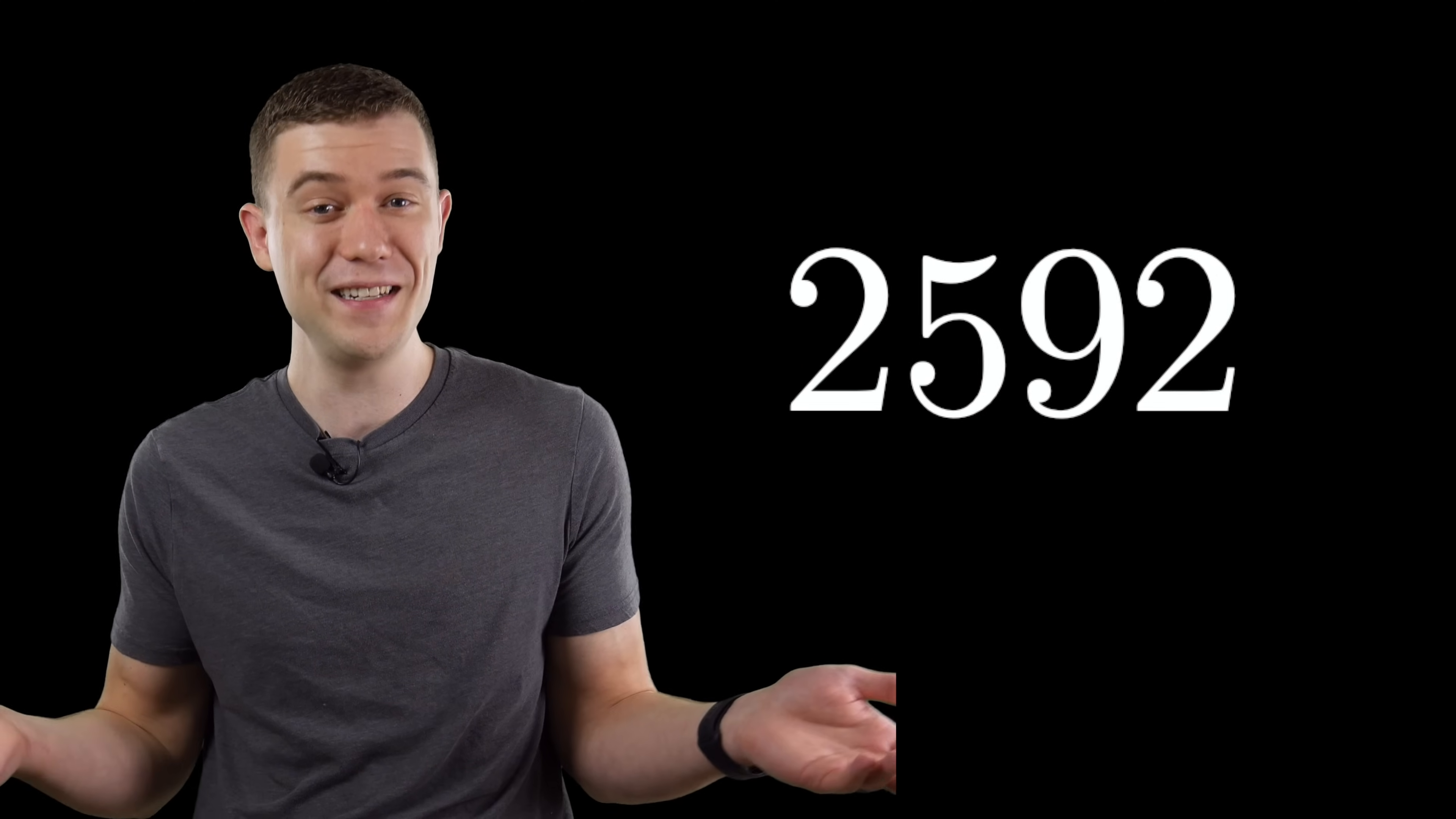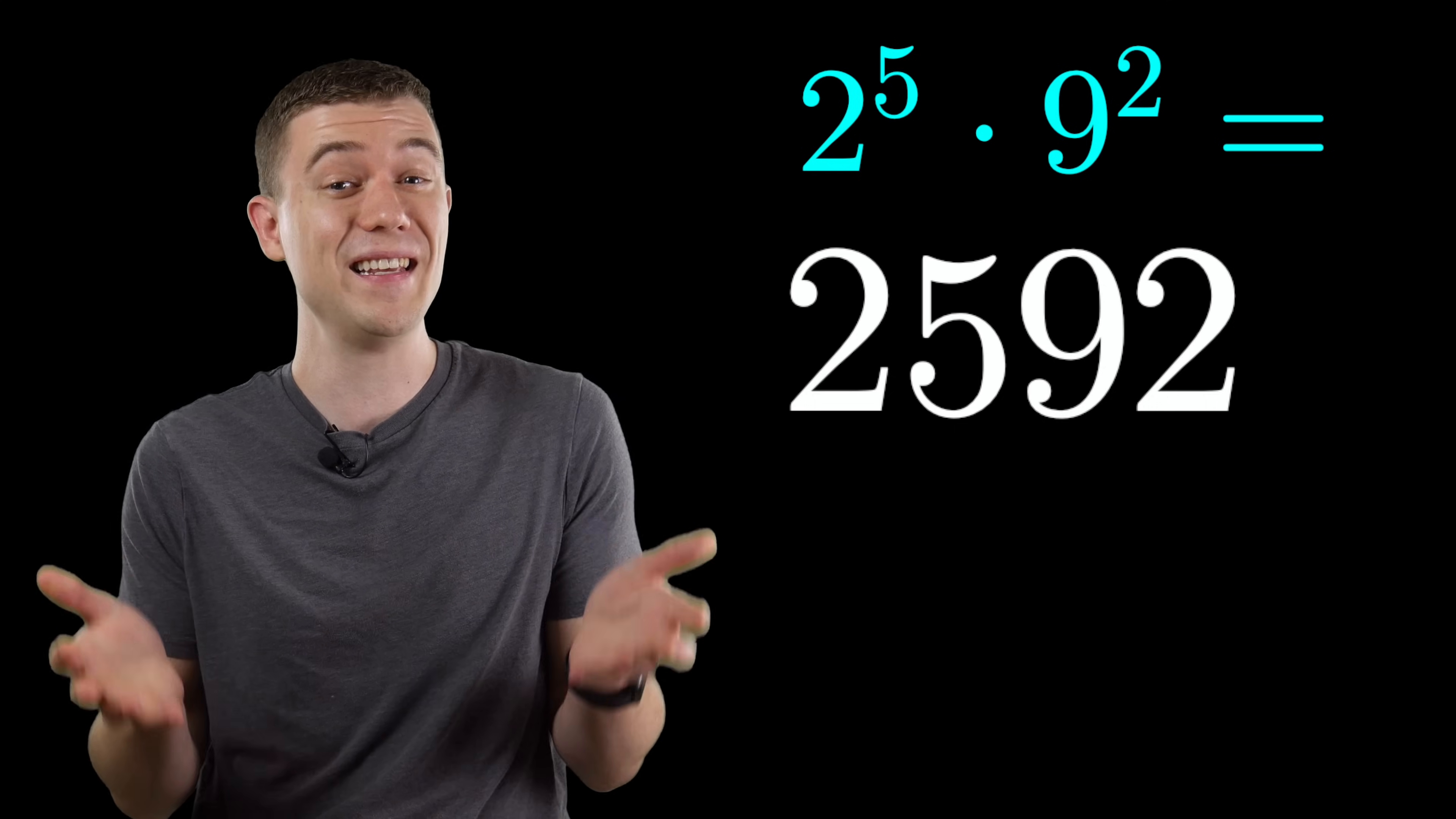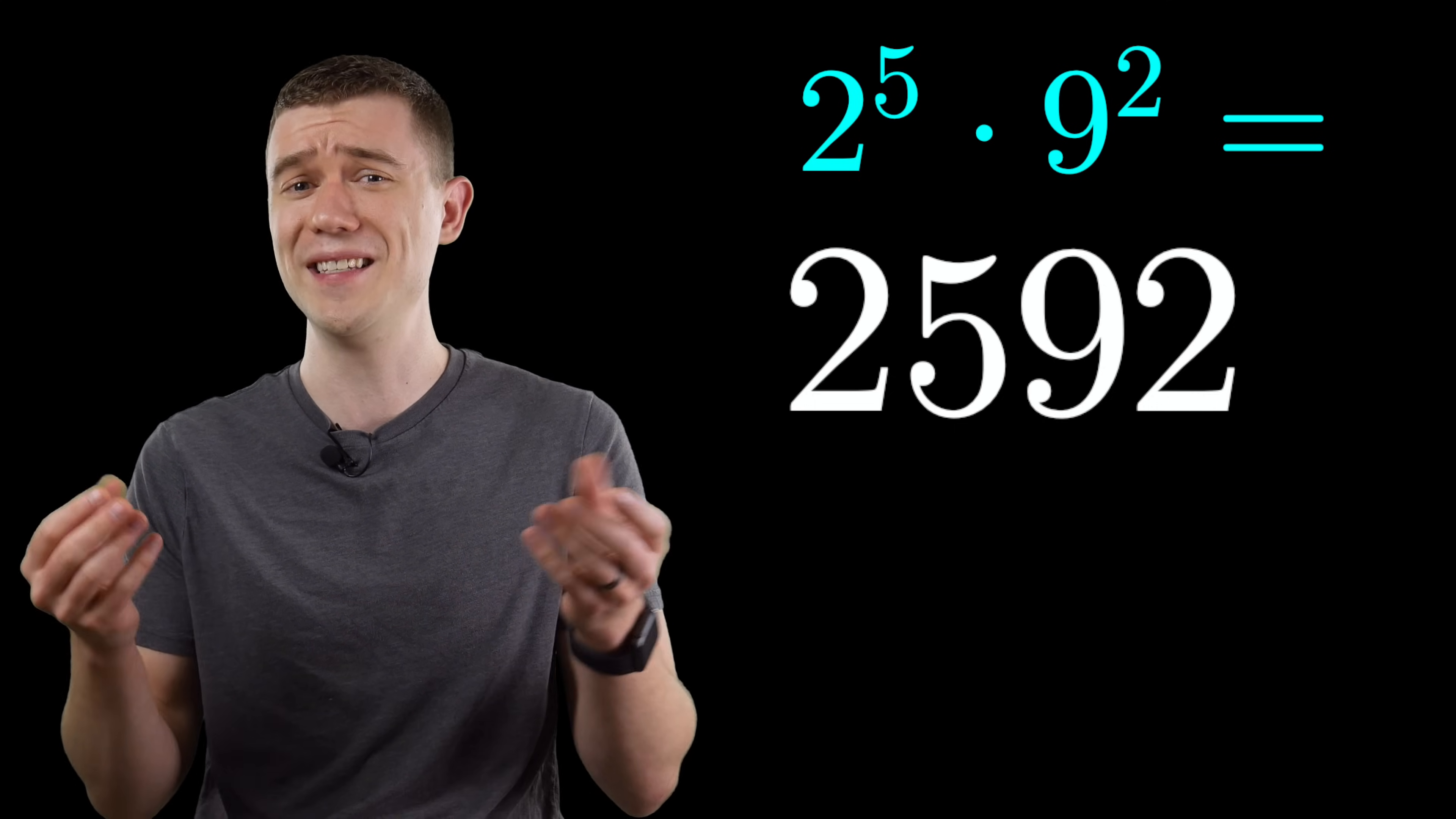Number 9 is incredibly cute. 2 to the fifth times 9 squared. What do you suppose this is? Well, obviously it's 2,592. Just take the exponents, drop them down in place, and this equality holds true. I don't know how you would have figured that out, but isn't that great?